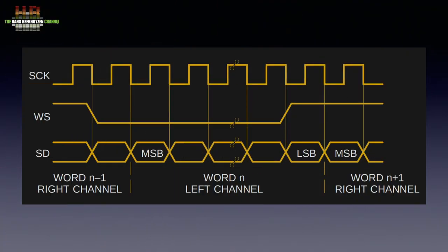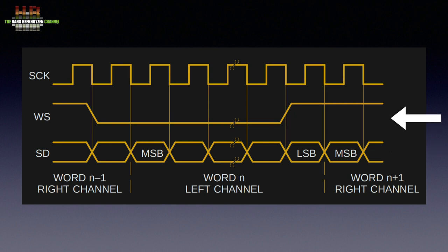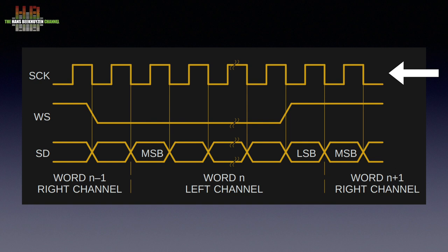I2S was originally designed to make digital audio connections between chips on a circuit board within a device like a CD player. It has separate lines for the serial audio data, serial clock, and word select. The serial data line multiplexes the left and right channels. The word select line signals whether the data on the serial data line is carrying left or right channel data, while the serial clock holds it all together timing-wise, pulsing for each discrete bit of data. In principle this is an extremely robust way of transporting digital audio, but it was never designed to be used between devices.